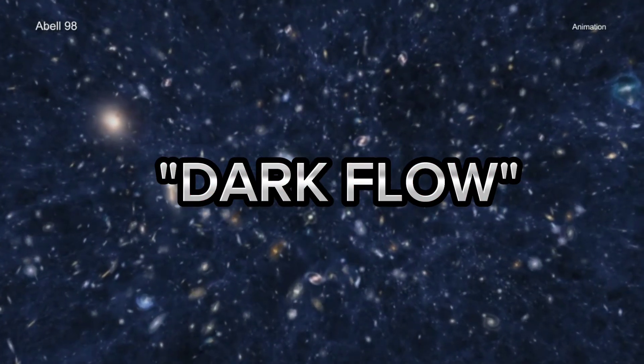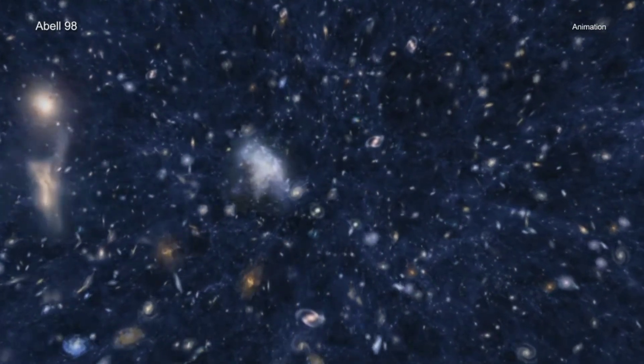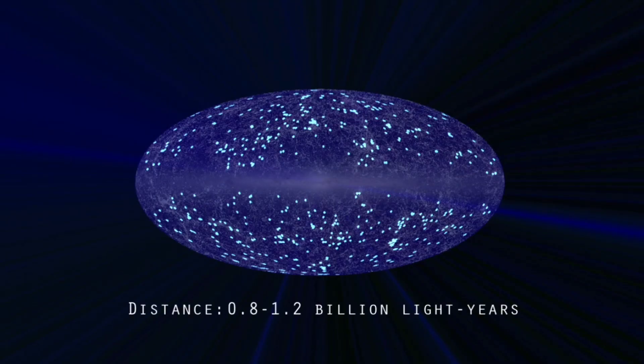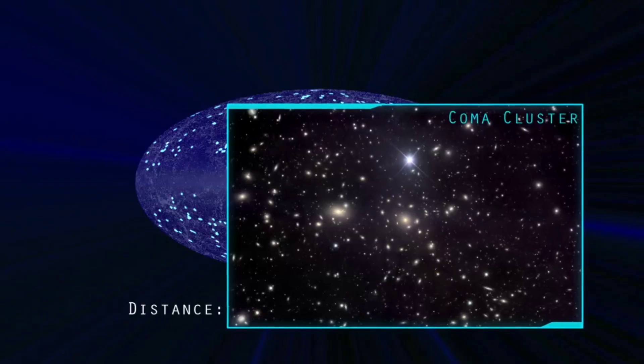Astronomers were thinking that something must be causing the dark flow, but what? Some scientists had suggested that the Great Attractor, a massive concentration of mass located 250 million light-years away in the region near the constellations Hydra and Centaurus, may be the cause of this dark flow.